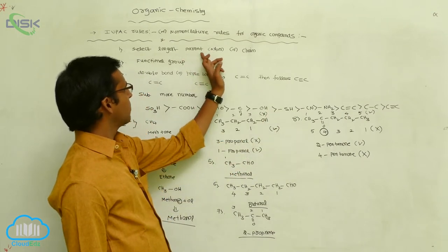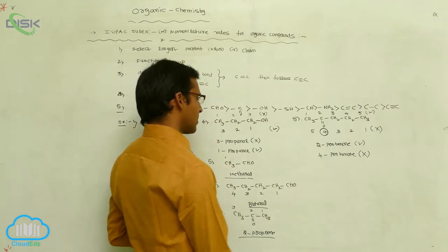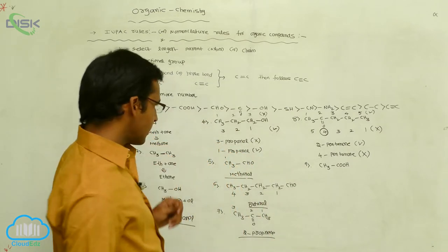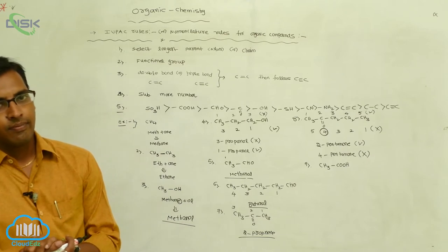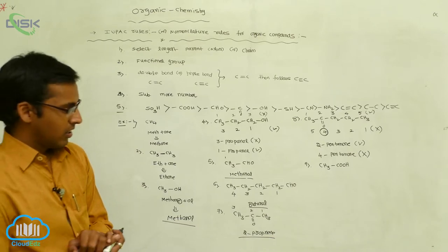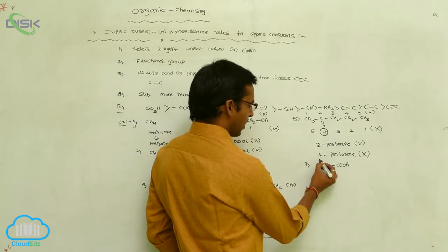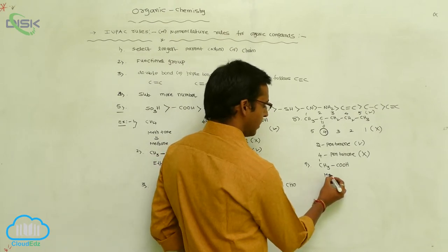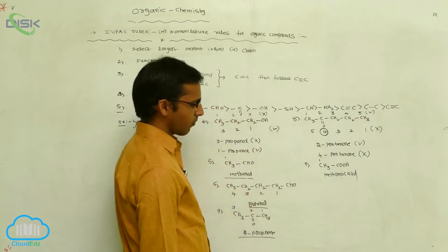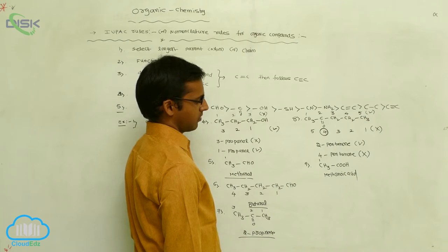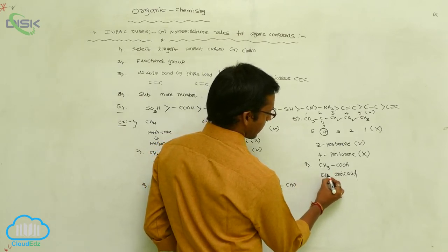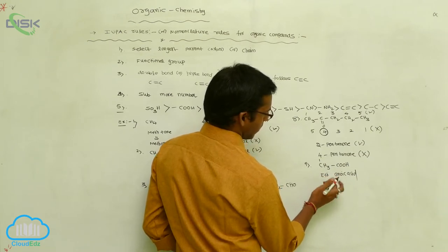First, select the longest carbon chain so that the functional group gets the lowest number. For example, consider CH₃COOH. Here, the COOH is your functional group. The secondary suffix for carboxylic acid is '-oic acid'. According to the functional group, there is only one carbon, so the root word is 'meth-'. The name is methanoic acid. Its IUPAC name is methanoic acid. If two carbons are present, the name is ethanoic acid.